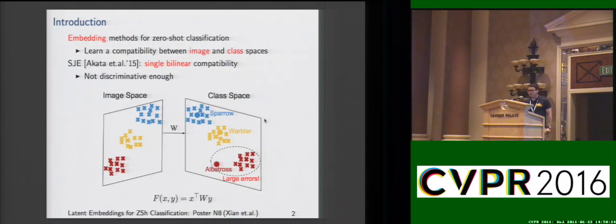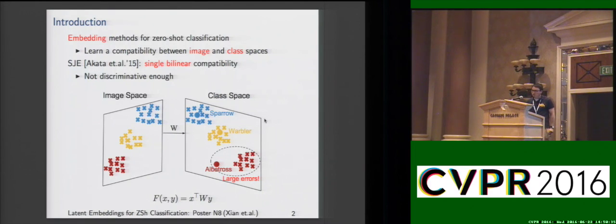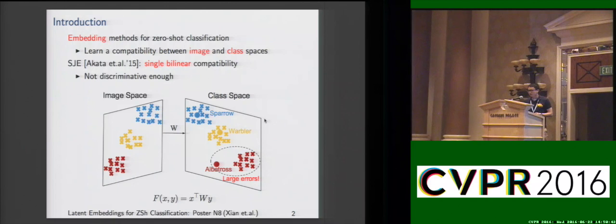Ideally, the embedding matrix should project each image instance to be as close as possible to the ground truth class embedding. However, a single embedding matrix might not be discriminative enough to do that, because of the limitation of the linear model. For instance, in this case, the instances of certain classes are not correctly projected.